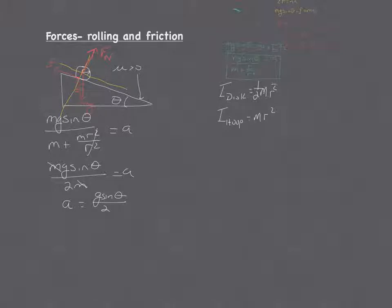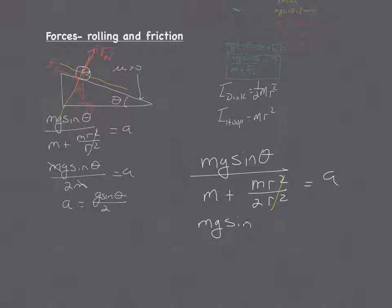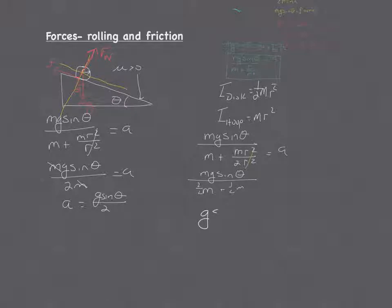Let's get that going. So mg sine theta all over m plus one-half mR squared. The R's still cancel. Now we end up with 1 plus a half m. So that's going to be 2 over 2 plus 1 over 2. And the m's cancel. So you have g sine theta all over 3 halves, and that equals the acceleration.